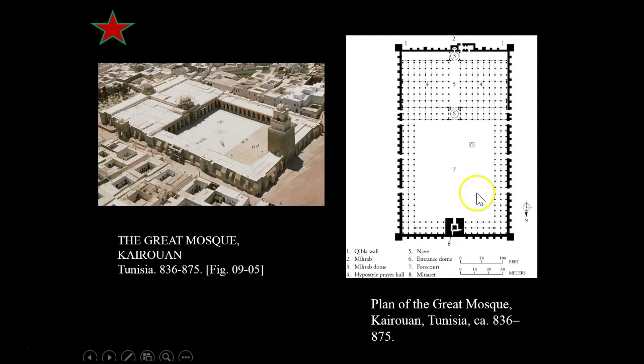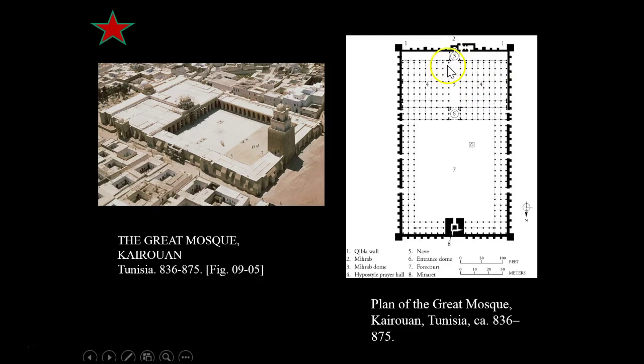Usually there would be a fountain and plants in this courtyard area. There is a cleansing ritual that worshippers would perform — they would go to the fountain and perform this cleansing ritual before entering the hypostyle prayer hall. The worshippers would be in between the columns, lay a mat out, and prostrate themselves toward Mecca.